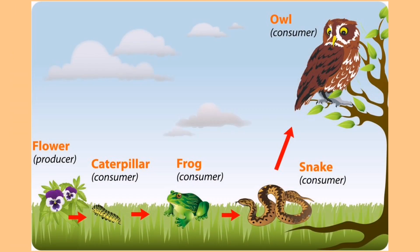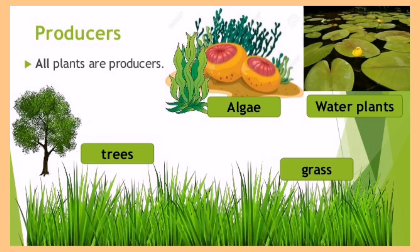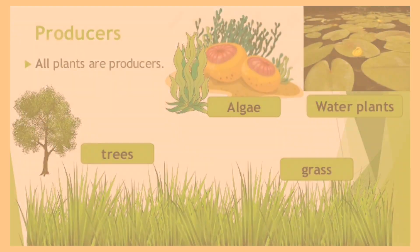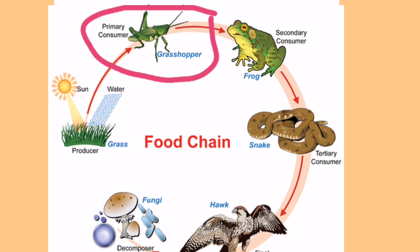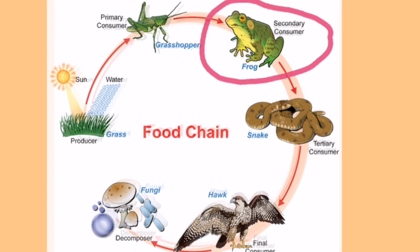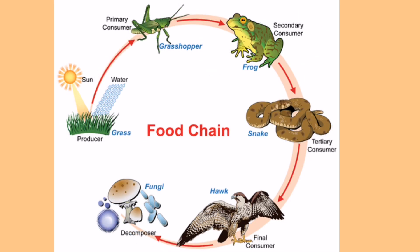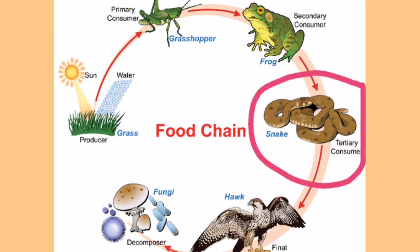A food chain is a feeding relationship between organisms within a habitat, and the base of all food chains are producers. Looking at the diagram, there is an order in the trophic levels and how energy is transferred to each organism. The first eater, called the primary consumer, receives the most energy from the producer. The second eater, the secondary consumer, eats the primary consumer and receives less energy than the primary consumer.